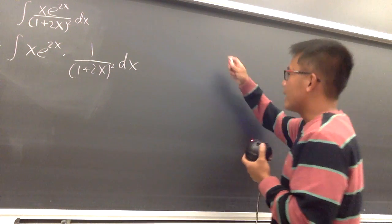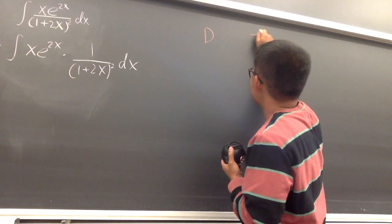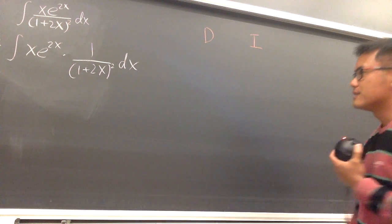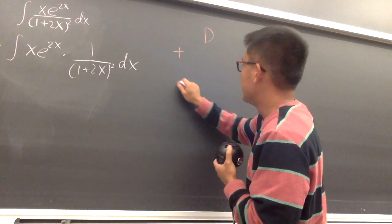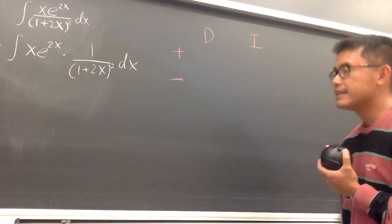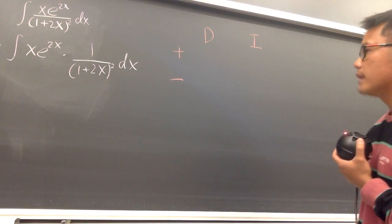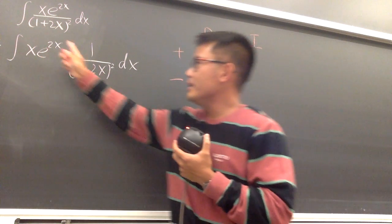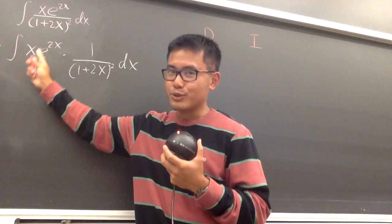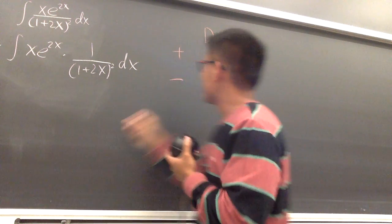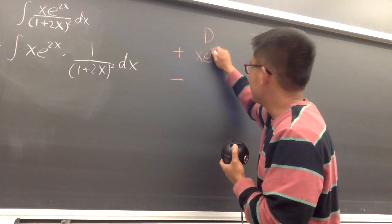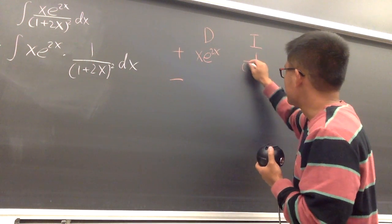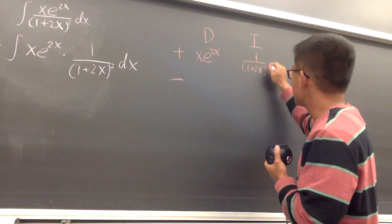Let me put it on the side right here. I got my red chalk today. D stands for to be differentiated, and I stands for to be integrated — don't forget to put a plus-minus on the side. We'll differentiate x times e to the 2x, because if you want to integrate that part you'd have to do integration by parts again. And we'll integrate 1 over parentheses 1 plus 2x raised to the second power.